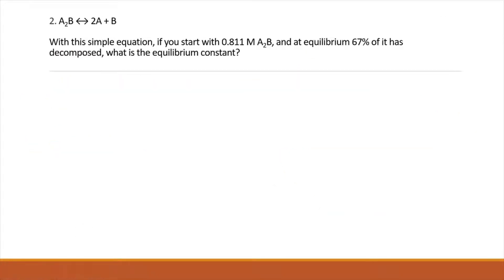Number two, we're given a generic reaction. We're told A2B is in equilibrium with 2A plus B. We're told with a simple equation, you start with 0.811 molar of A2B, and at equilibrium, 67% of it has decomposed. We want the equilibrium constant.